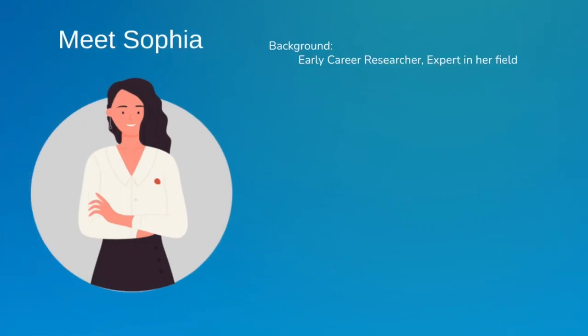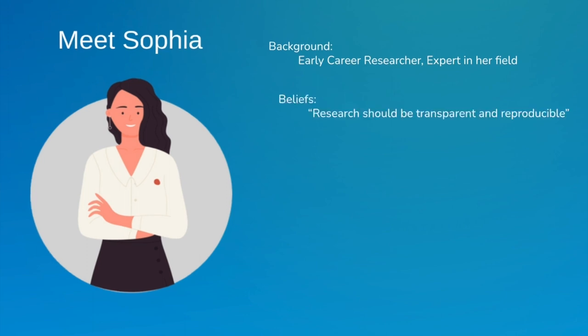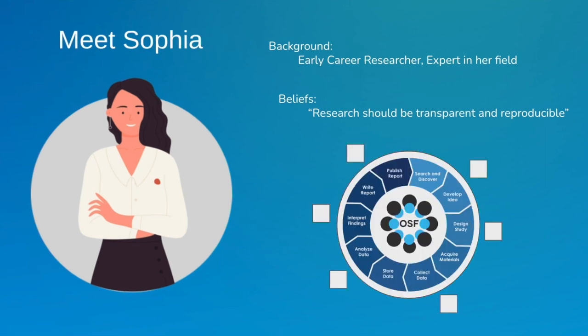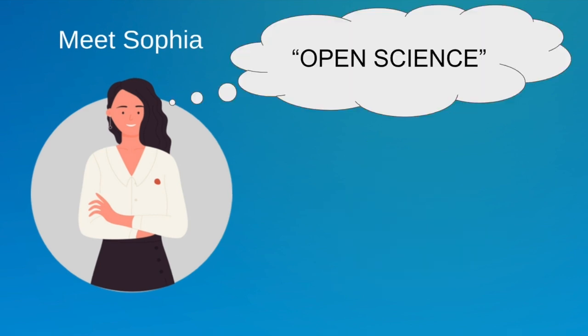Meet Sophia, an early career researcher who is well versed in her field. She believes that all aspects of scientific research should be transparent and reproducible, that all steps in the research life cycle are valuable, and that a well crafted hypothesis, protocol, or data collection is still important even when an experiment didn't go as planned. Upon exploring these ideals, she came across the term open science, but isn't sure how she can put these concepts into practice.